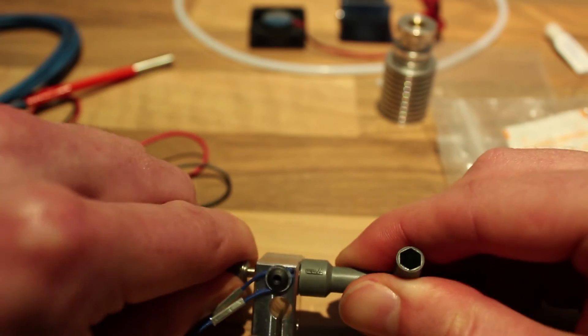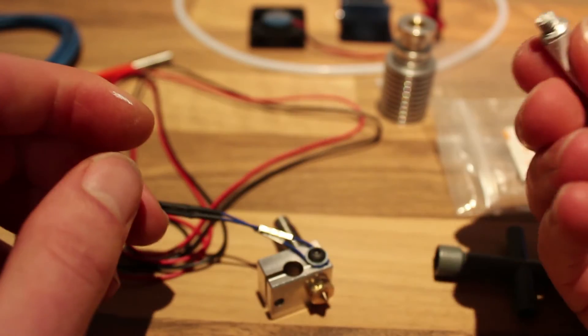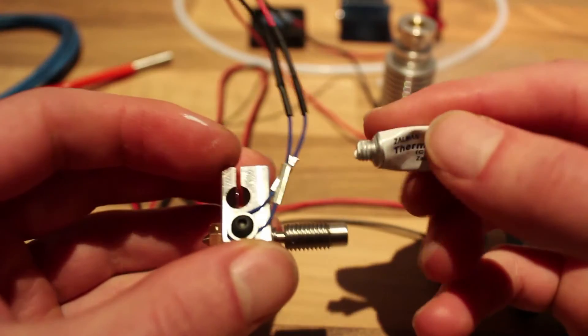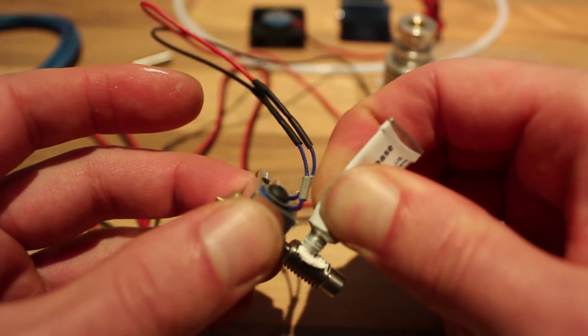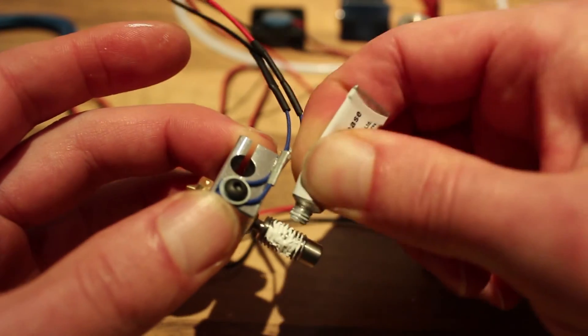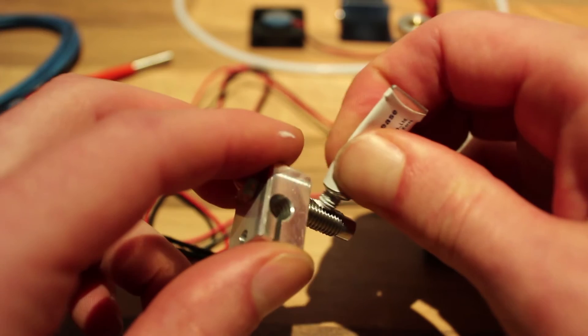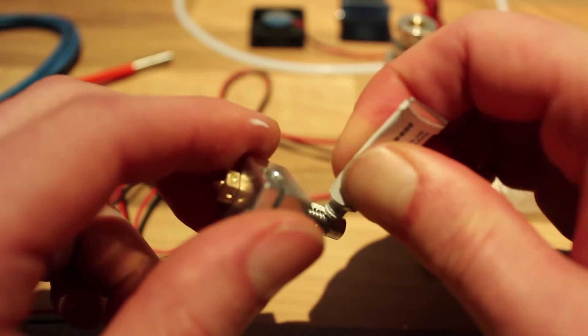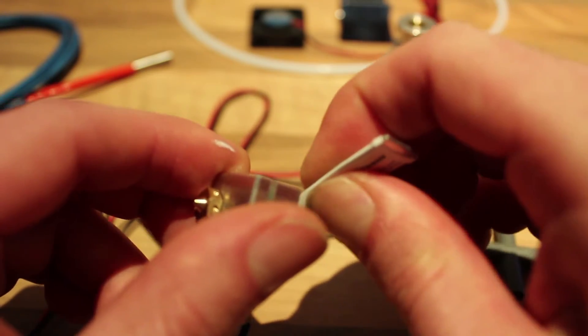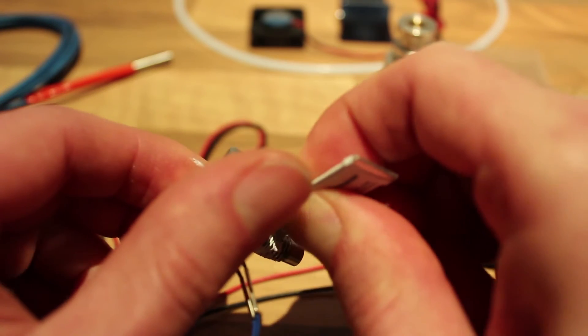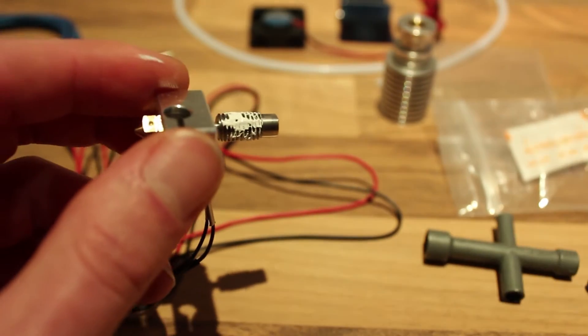Tighten it. Next I take some old thermal grease and apply it to this side of the heat break, because this side needs to be cooled with the heat sink. That looks enough to me.